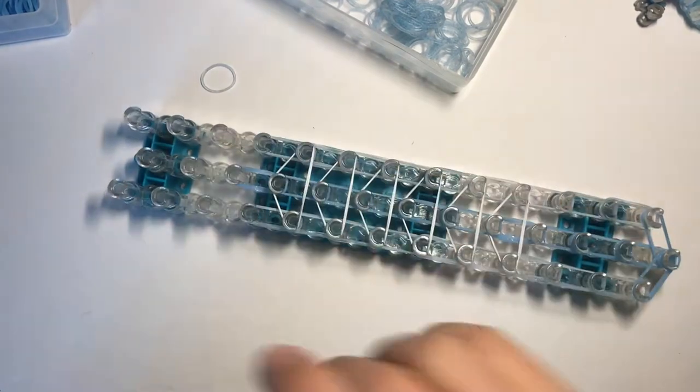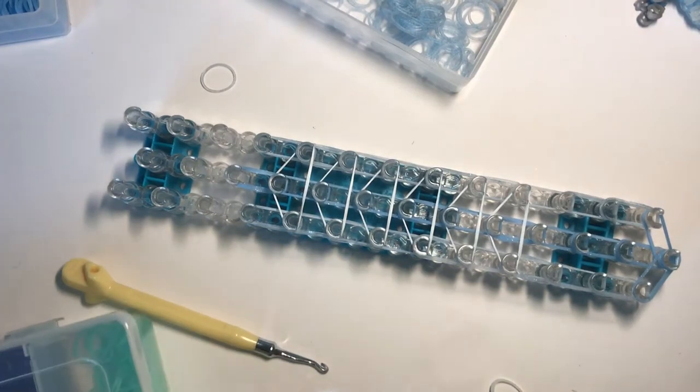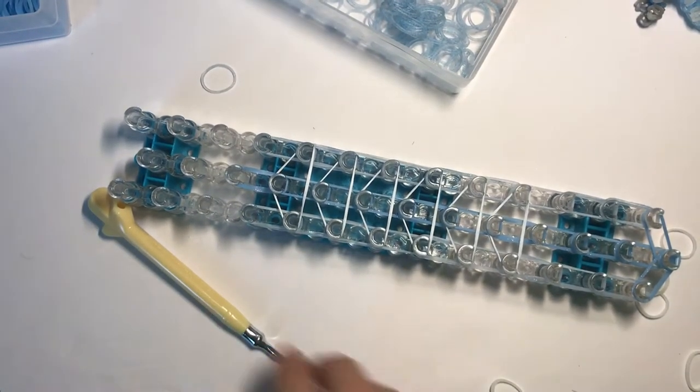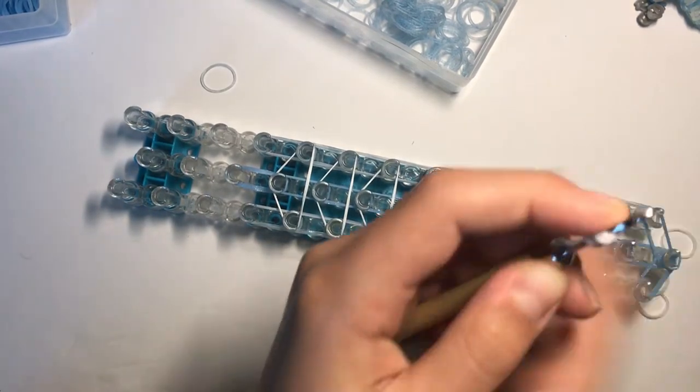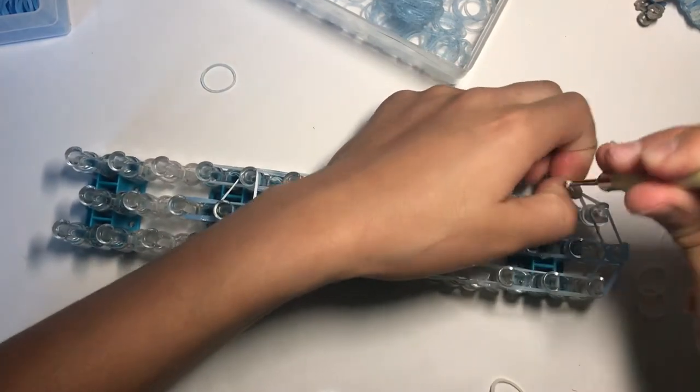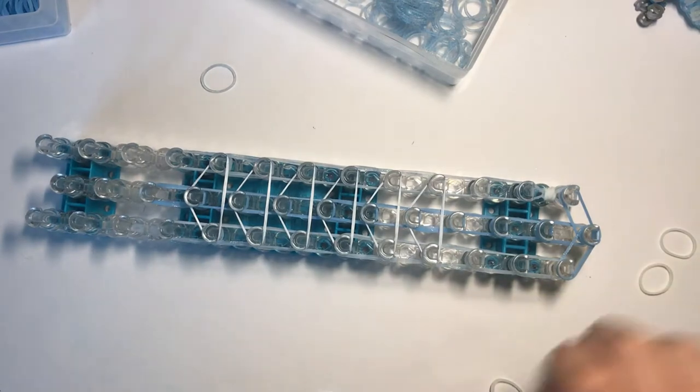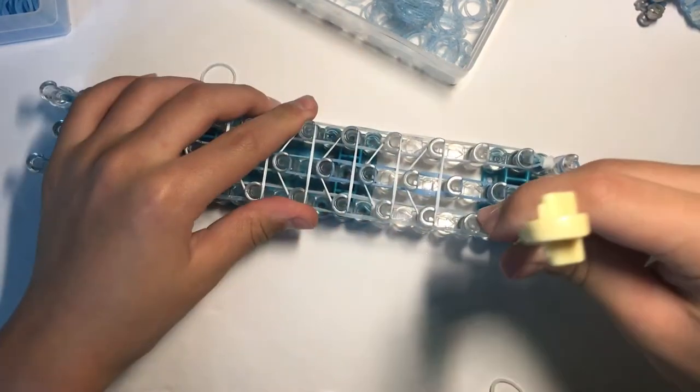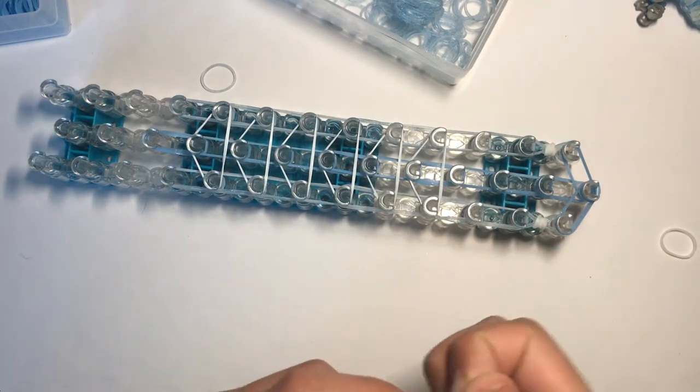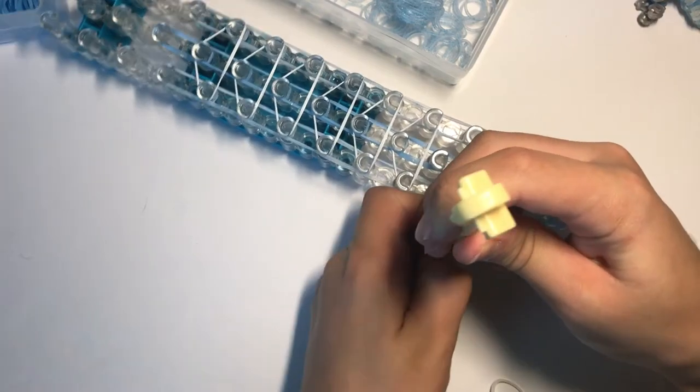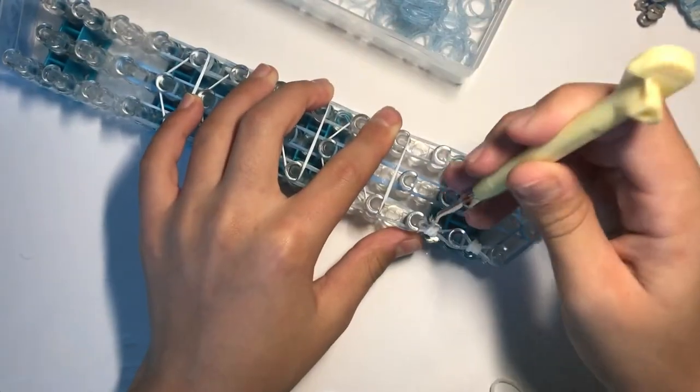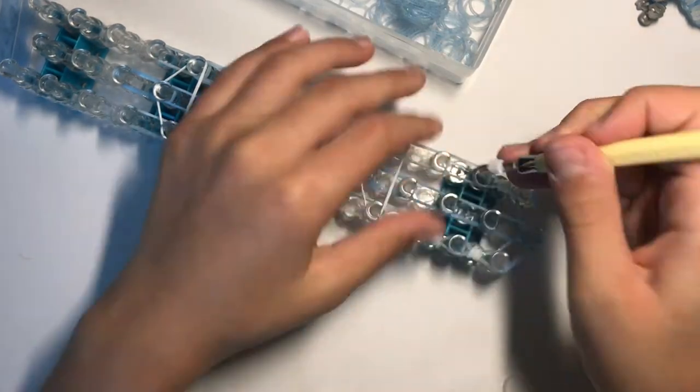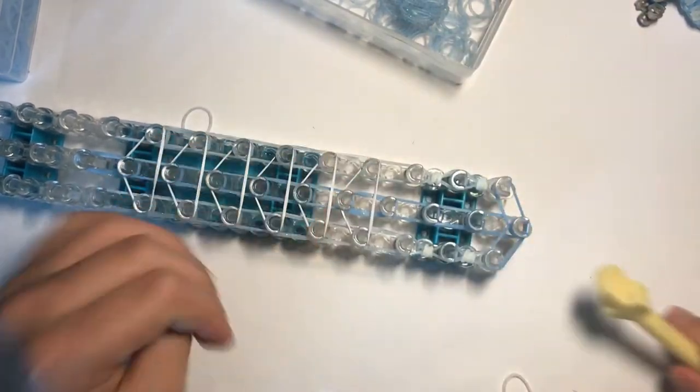And now we need four white for our teeth. Sorry for the loud noise. Taking a white band, wrap around your hook four times, lift up these two, slide that on. Create another tooth. We're going to be sliding it onto this peg. Another one, sliding it onto this peg. And the final tooth - so four. Lift it up, slide it on.